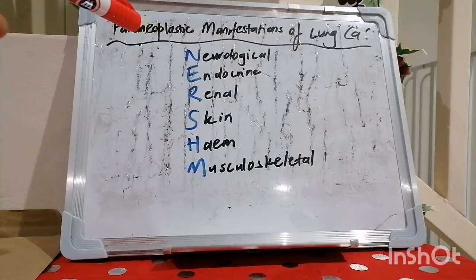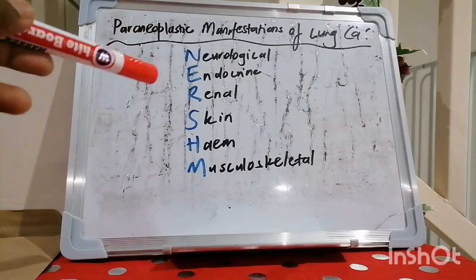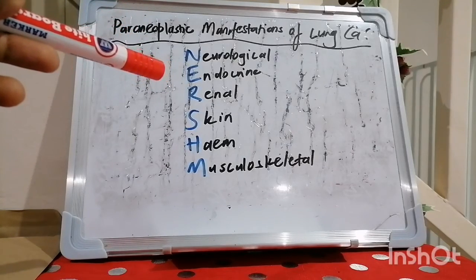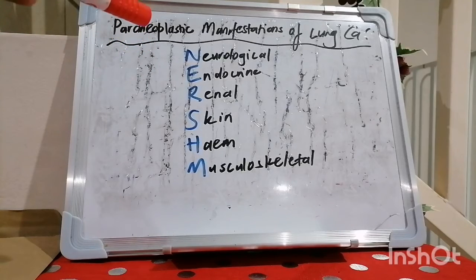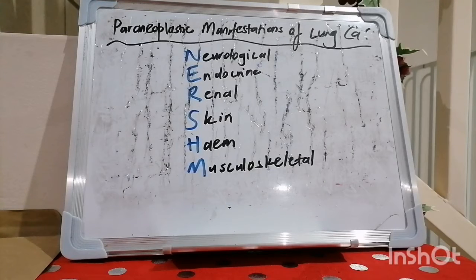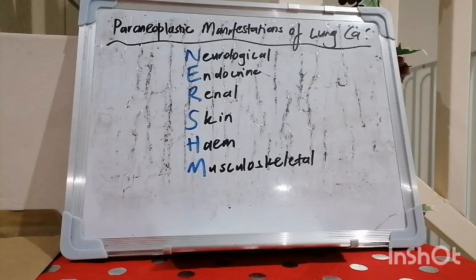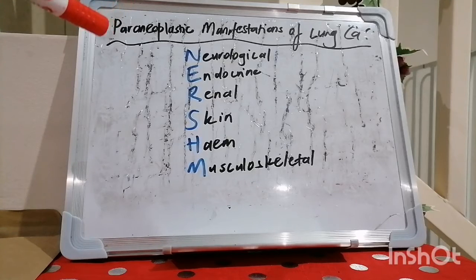U stands for endocrine manifestations — the subtype mainly responsible is small cell lung cancer. Examples include the Syndrome of Inappropriate ADH Secretion (SIADH), in which the patient has euvolemic hyponatremia, as the lung cancer produces too much ADH. Another example is ectopic Cushing's as a result of ACTH — adrenocorticotropic hormone — elaborated by the small cell cancer.